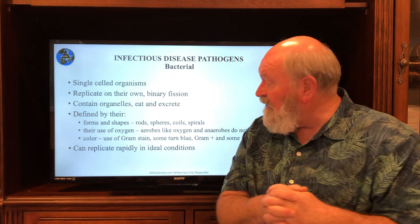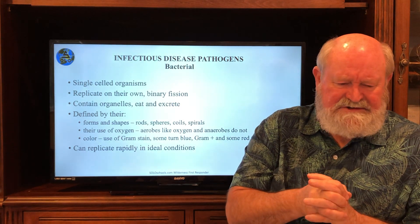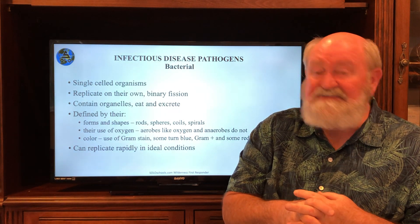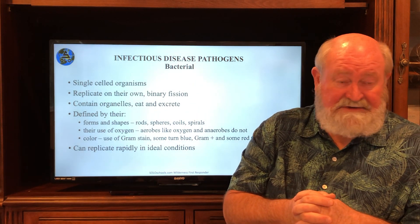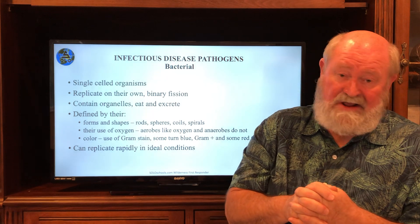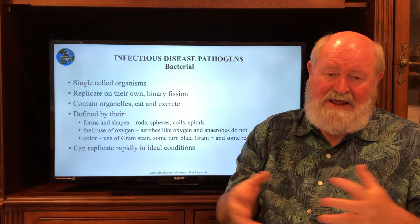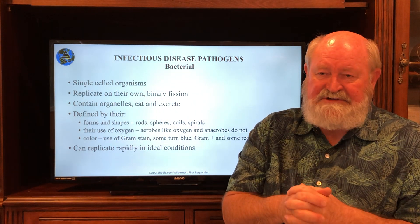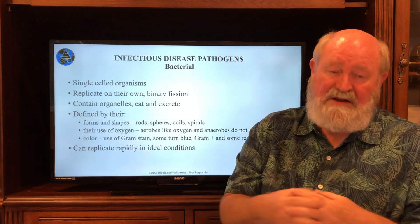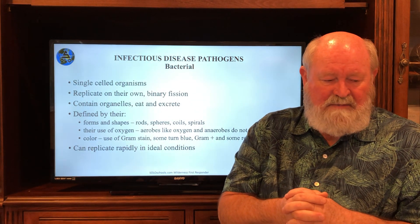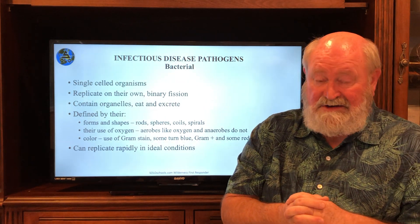A bacterium is defined first and foremost by its shape: some are rods, spheres, coils, or spirals like spirochetes (such as Lyme disease). They're also defined by their use of oxygen — aerobes use oxygen, anaerobes don't — and by how they react to staining. We use a Gram stain: some bacteria are Gram-positive and turn blue, others are Gram-negative and turn red. The most important thing is that bacteria can replicate really rapidly under ideal conditions.